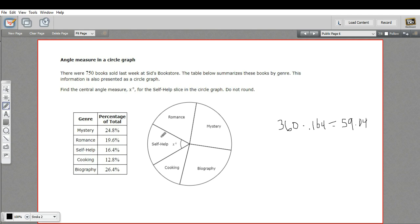And we've got 59.04 degrees. So this angle, x right here, should be 59.04 to represent 16.4% of this circle.